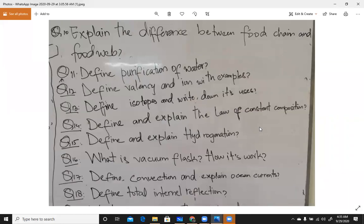What's the next question? Define valency and iron with examples. This is asked a lot of times. Sometimes define valency and sometimes define iron. Question number 13: Define isotopes and write down its uses. These are the top 30 important questions of science. But this is why you have to do the class 6 science exercises, because these are the important questions from class 7.